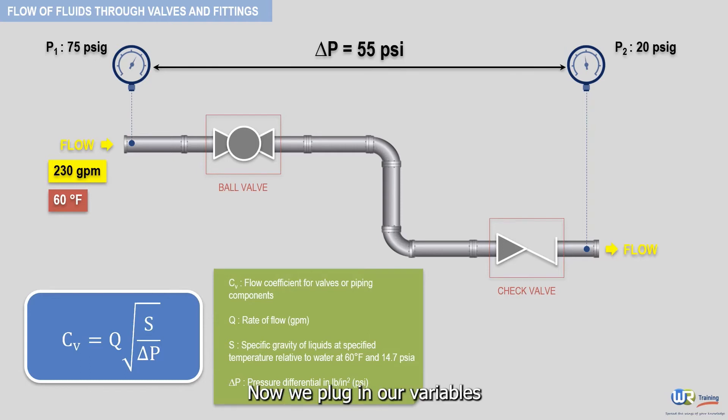Now, we plug in our variables for a result of 31. Therefore, this piping system becomes equivalent to the following one.